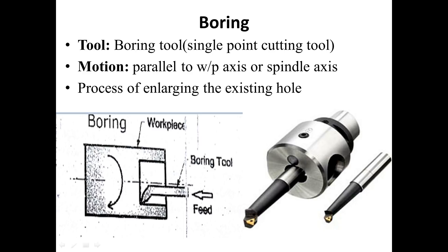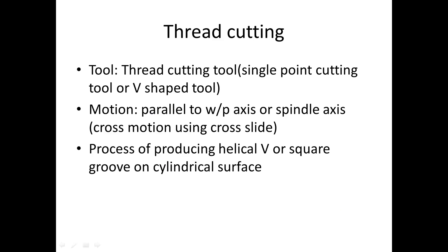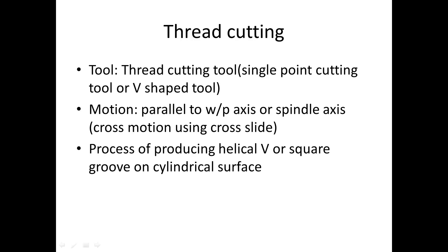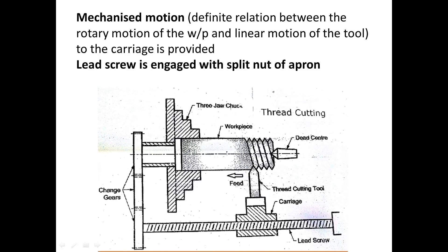The cylindrical workpiece can be placed inside the chuck of the lathe. As we discussed, this boring tool is a single point cutting tool. Thread cutting is an operation which is performed on a lathe machine by using a single point V-shape tool. The motion is parallel to the normal axis to the workpiece or the spindle, and the cross motion is given by using the cross slide. Here we can produce a helical V or square groove on a cylindrical surface.